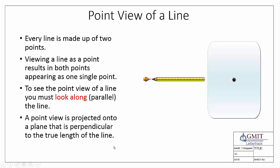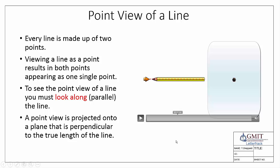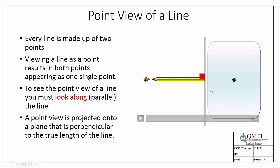When looking along a line we need to project it onto something, so the point view is projected onto a plane that is perpendicular to the true length of the line. Here we can see the outline of that plane when viewed straight on. The position of the plane is always projected perpendicular to the true length — that's very important, it has to be to the true length of the line.